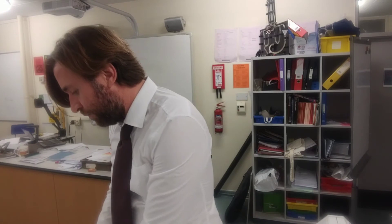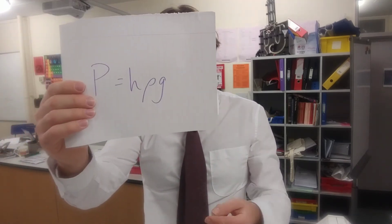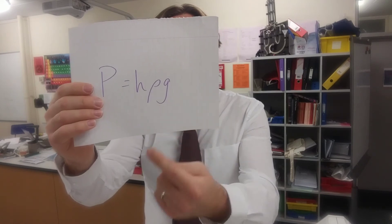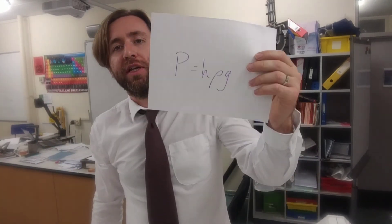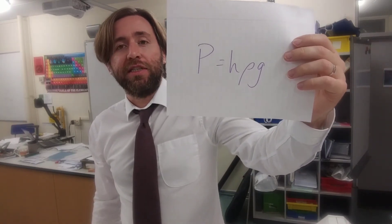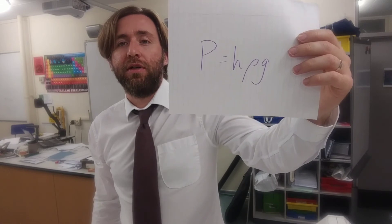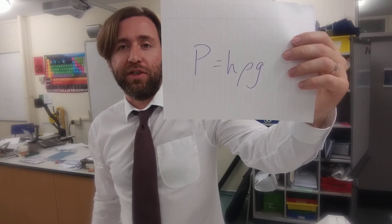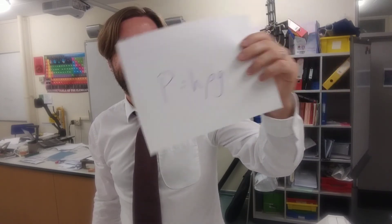Lastly, if I could go to planets with different gravitational field strengths, I'd find that pressure and gravitational field strength are also proportional. That means I can write a very useful equation to work out the pressure at any depth, in any density, in any gravitational field strength. Pressure in a column of fluid equals depth times density times gravitational field strength.